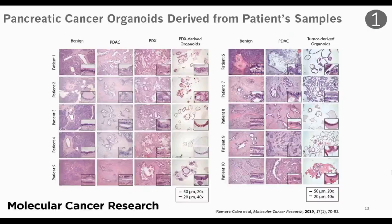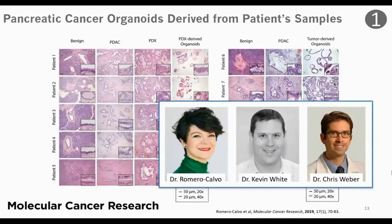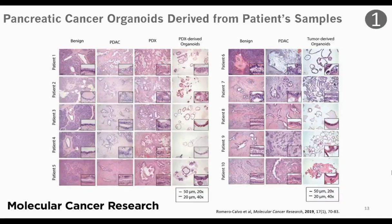While today's talk is primarily a technology talk, the cancer I'll be focusing on to demonstrate this technology is pancreatic cancer. Previously published in the Journal of Molecular Cancer Research by colleagues and collaborators in Kevin White's lab, they developed patient-specific organoids derived from surgical samples obtained during pancreatic cancer removal surgery from 10 different patients — all collected from our own University of Chicago Hospital. They examined the phenotypic and genetic features of these organoids and compared them to the original tumors for all 10 patients.